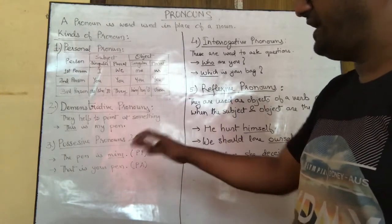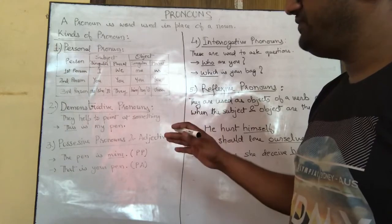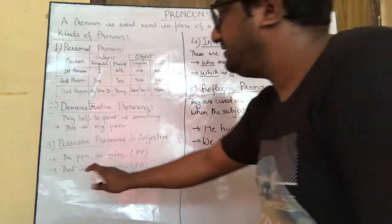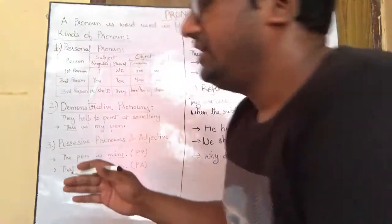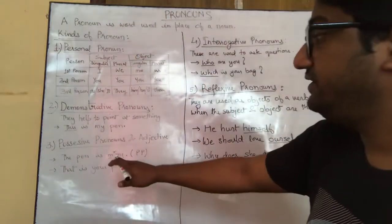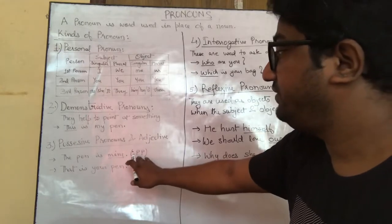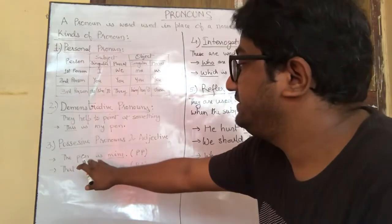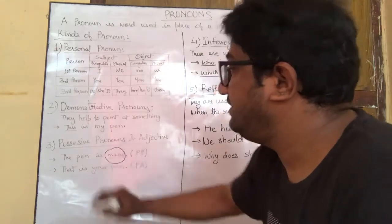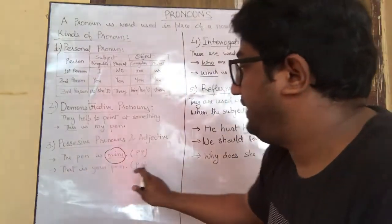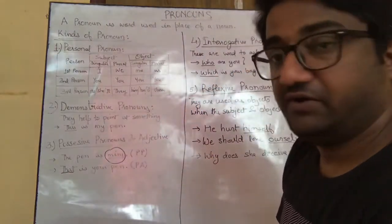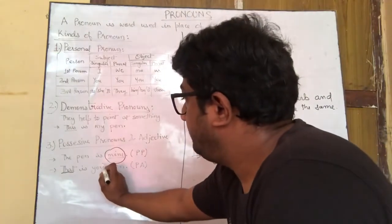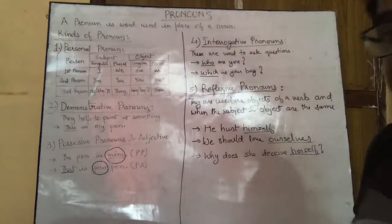Next is the possessive pronoun and possessive adjective. Examples for possessive pronouns and adjectives would be mine, your, yours. For example: 'The pen is mine.' Here 'mine' is a possessive pronoun. 'That is your pen.' Here 'that' is the demonstrative pronoun, and 'your' is the possessive adjective.